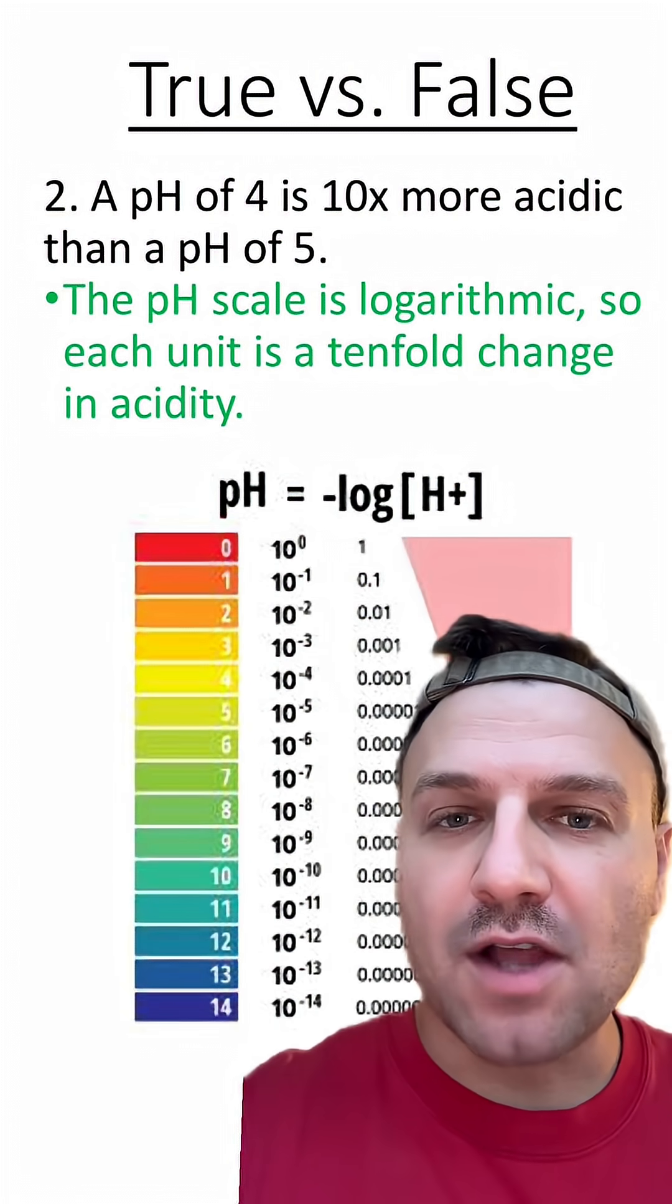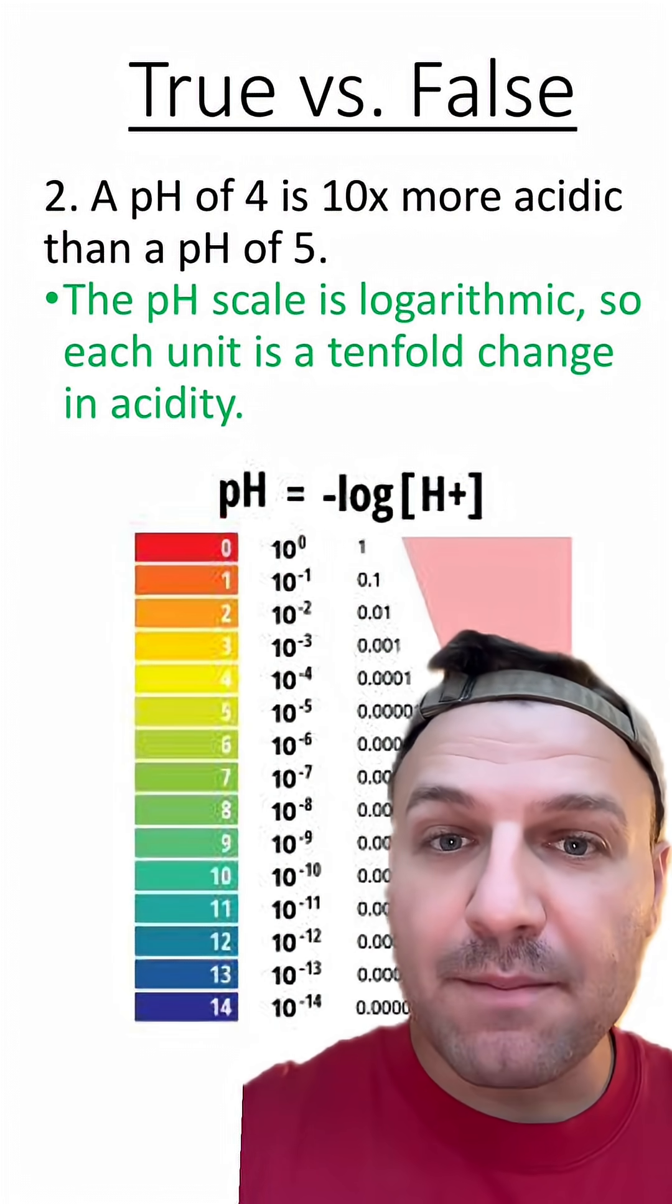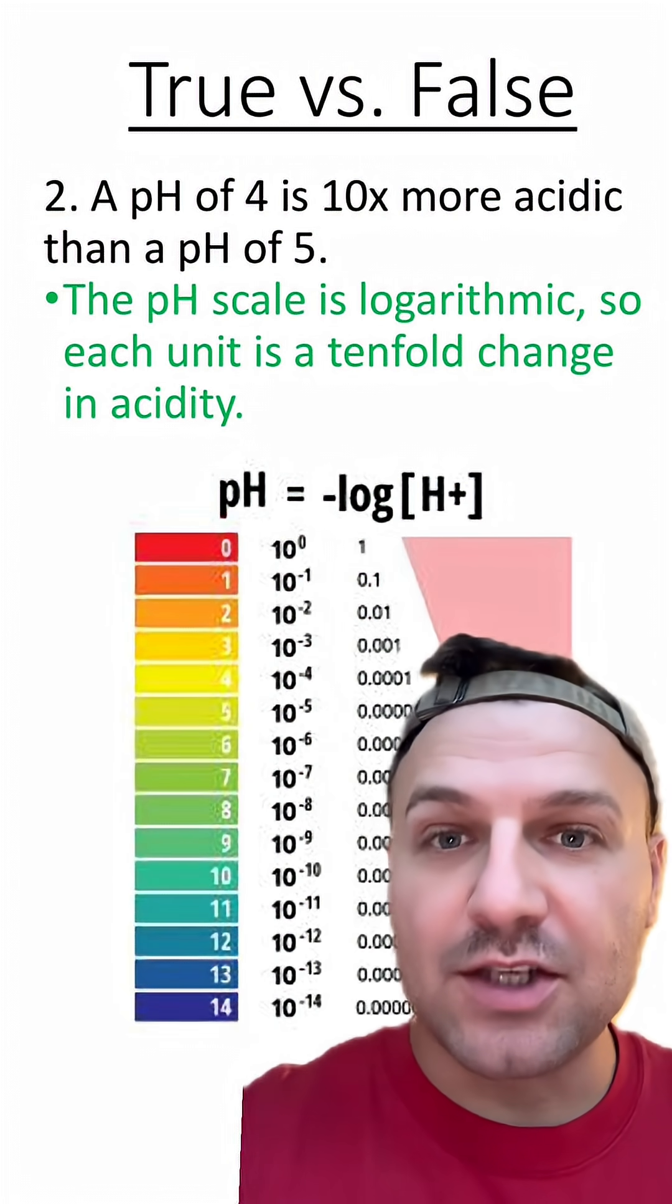Number two is true because the pH scale is logarithmic, which means each number is a tenfold change in acidity.